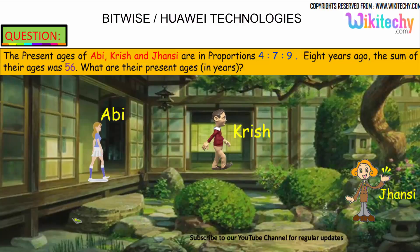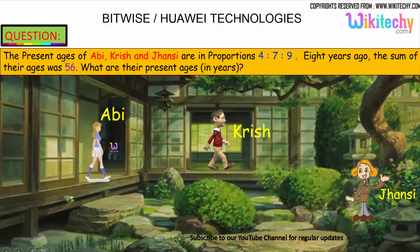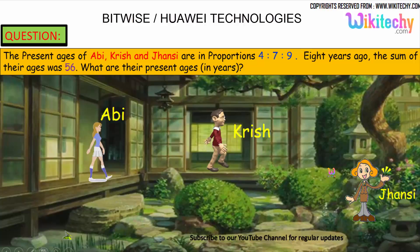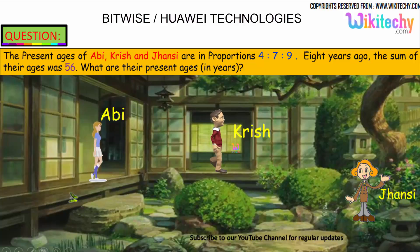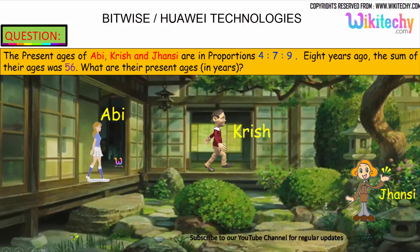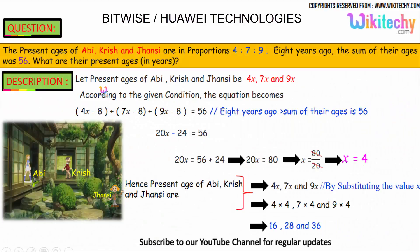Let's move on to the next problem. Abhi, Krish, and John C. are in the proportion of 4:7:9. Eight years ago, the sum of their ages was 56. What are their present ages? The present ages of Abhi, Krish, and John C. are in the proportion of 4:7:9, so we take them as 4x, 7x, and 9x.